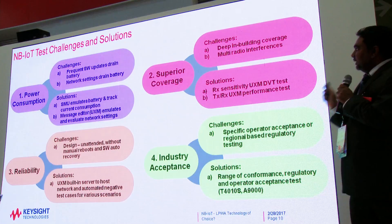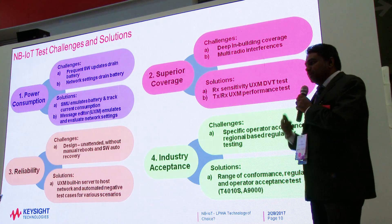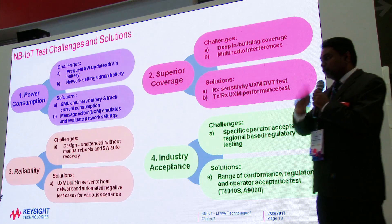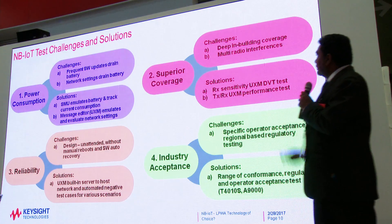Superior or extreme coverage is another very important feature. A good link budget is crucial to penetrate indoors or into basements — for example, smart parking applications used in basements require extreme coverage enabled by the good RF link budget. Some NB-IoT devices also house multiple radios, from Bluetooth all the way to cellular, so it's important to avoid interference. Keysight provides solutions to characterize RF and do complete measurements of RF parametric and performance.